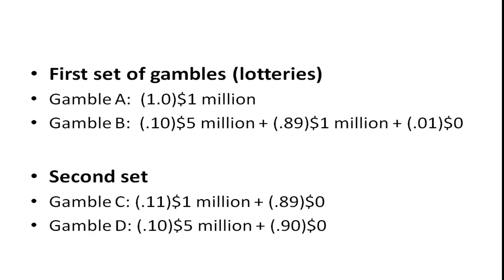In gamble B, there's a 10% chance of receiving 5 million, plus an 89% chance of receiving a million, plus a 1% chance of receiving nothing. If you had the choice of those two gambles, which one would you take? Think about it, and we'll come back to that.